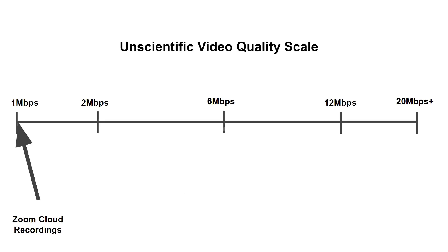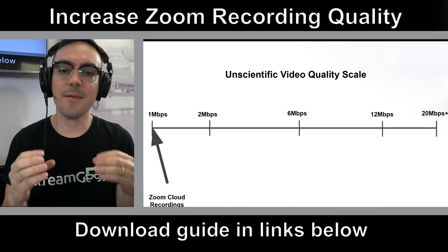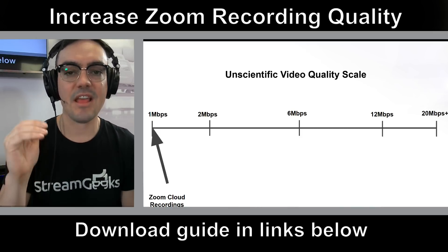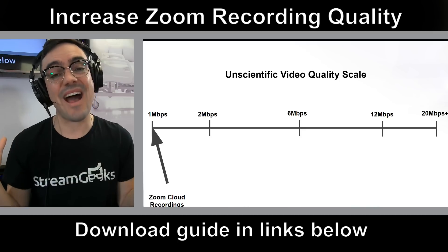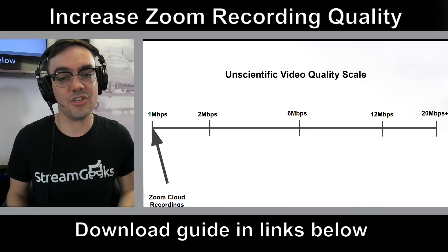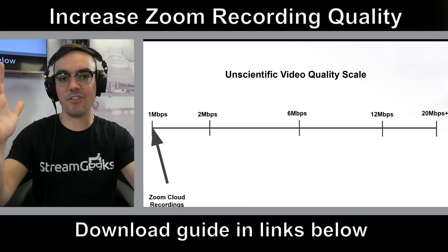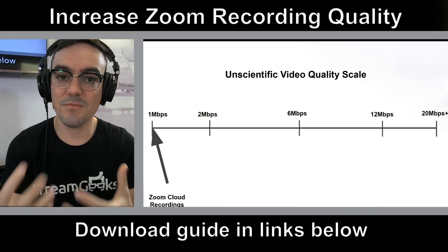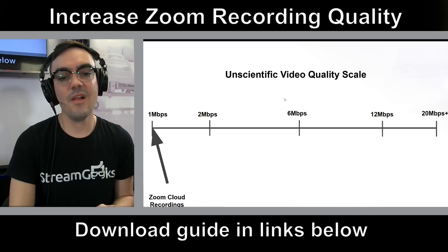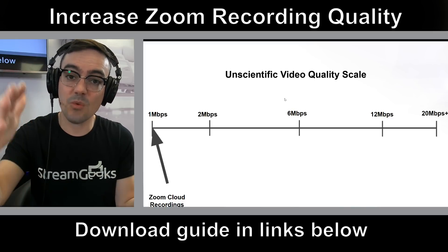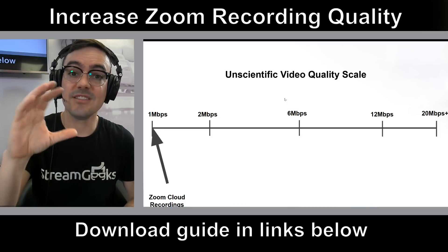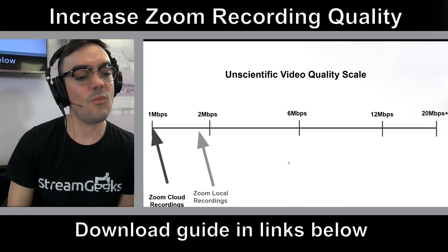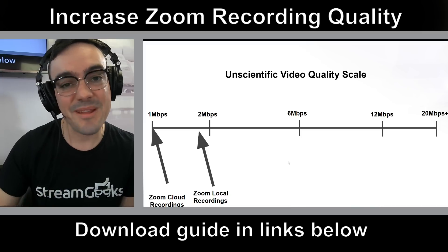Here's an unscientific video quality scale. Zoom cloud recordings can come in at less than one megabit per second. Bitrate is the amount of data recorded every second — the higher the bitrate, the higher the quality, regardless of resolution. Think of resolution like a canvas and bitrate as the paint: a huge canvas with not much paint means not a lot of data. Zoom cloud recordings come in around one megabit per second; local recordings are barely two megabits per second.